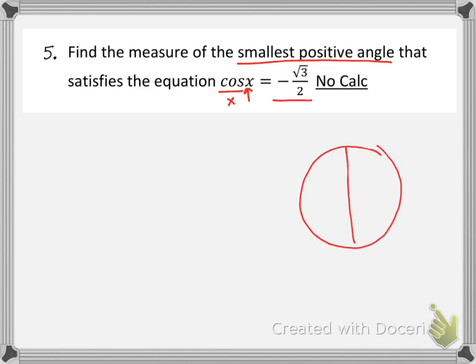So on my unit circle, I want the x-coordinate to be big and in the negative direction. So here and here are the 30-degree angles that both have the x-coordinate equal to negative square root of 3 over 2.